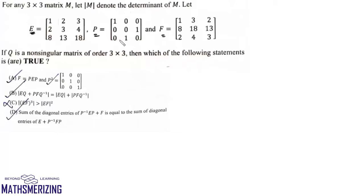If we look at matrix P and find P², P² will be the matrix [1 0 0; 0 0 1; 0 1 0] multiplied by [1 0 0; 0 0 1; 0 1 0].